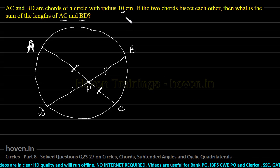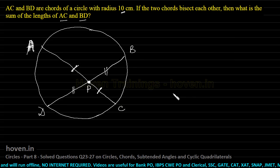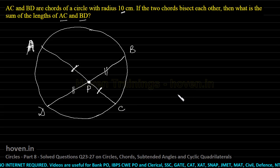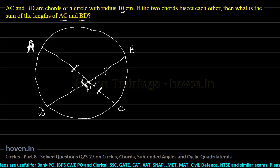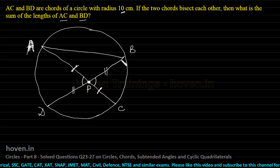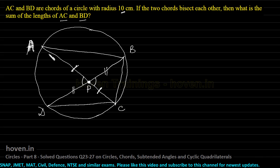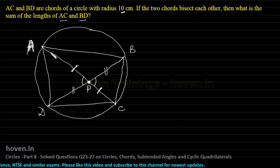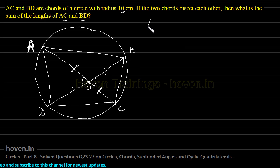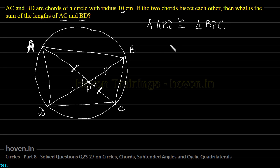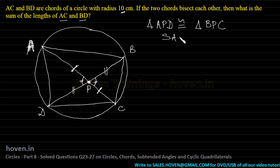Let us complete the figure by joining A to B, B to C, D to C, and A to D. We observe that these are vertically opposite angles at P. Triangle APD is congruent to triangle BPC by the SAS rule: the vertically opposite angle is equal, AP = PC, and DP = PB.